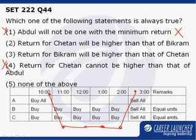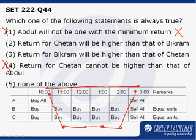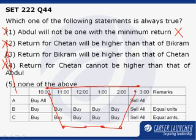Now let us look at options 2 and 3, which say the return for C will be more than that of B, and the return for B will be more than that of C. If we take another case in which the stock price remains absolutely constant throughout and does not change at all, the return for Chetan would be the same as that of Bikram, ruling out option 2 and option 3 also. Hence, the correct option is 5, which is none of the above.